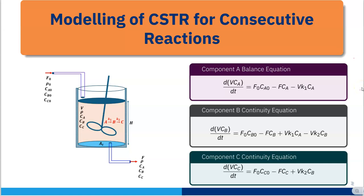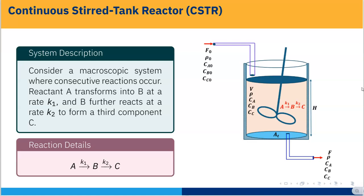Today I will talk about modeling of CSTR for consecutive reactions. Consider a macroscopic system where consecutive reactions occur: reactant A transforms into B at rate constant K1, and B further reacts at rate constant K2 to form a third component C. So the reaction scheme is A→B with rate constant K1, and B→C with rate constant K2.